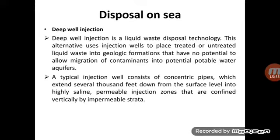Deep well injection is a liquid-based disposal method used to dispose of untreated liquid waste by means of concentric pipes. Using this injection method, we bring the water down to the lower level of the geological aquifers, which will not allow the water to reach the nearby potable water aquifers.